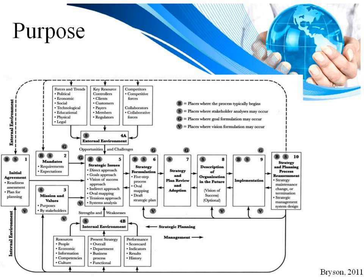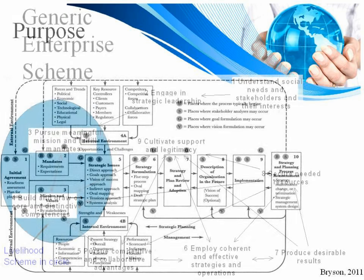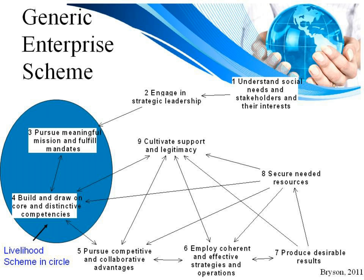As we look at Bryson's 10-step map again, the purpose of strategy formulation and plan development is to make sure our strategies clearly link together and link the organization to the community and the environment in ways that create enduring significant value. Starting with understanding social needs and stakeholders and their interests, we engage in strategic leadership within the organization, pursuing meaningful missions and building on core and distinctive competencies. This helps us pursue competitive and collaborative advantages — collaboration, particularly among nonprofits, is required. The numbered steps are interrelated and don't always flow in a one-to-nine order.